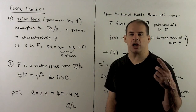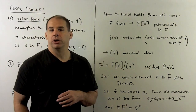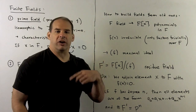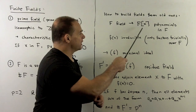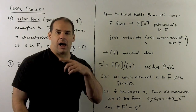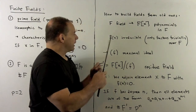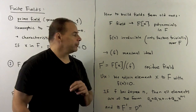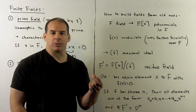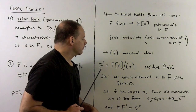Let's review our construction for residue fields. The idea is to build new fields from old fields: assume we have some field F, form the ring of polynomials in x with coefficients in F, and look for irreducible polynomials — polynomials that only factor trivially. If we find an irreducible polynomial of degree greater than or equal to one, that gives us a maximal ideal in F[x], and because we have a maximal ideal we can form the quotient, giving us what we call the residue field F′.